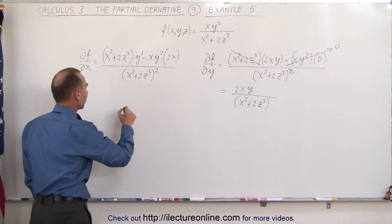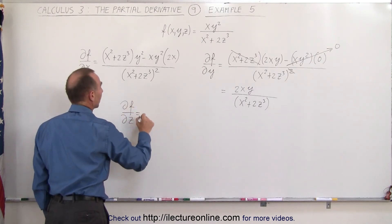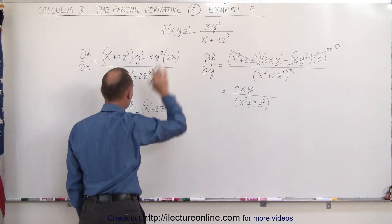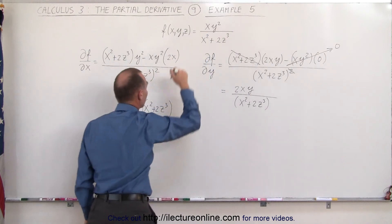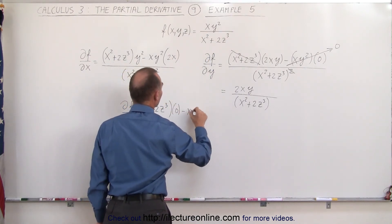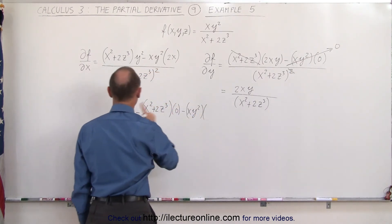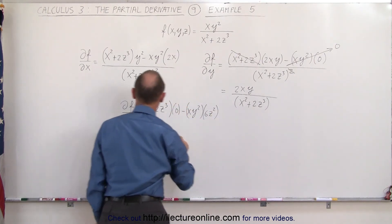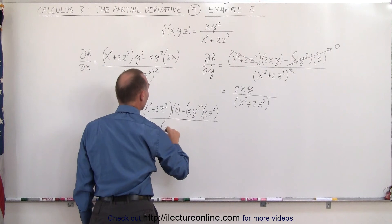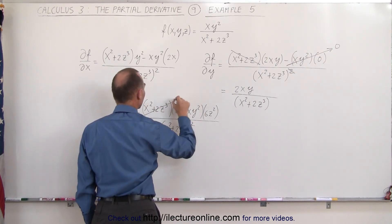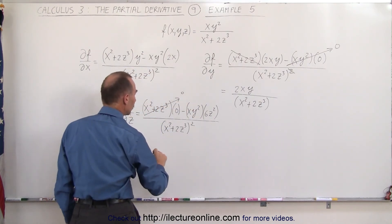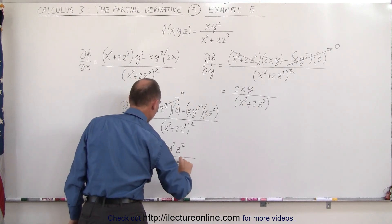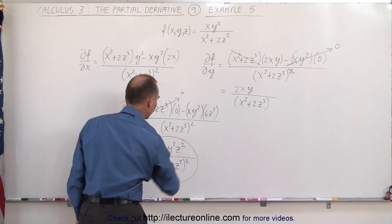Now let's take the partial derivative of the function with respect to z. We take the denominator, x squared plus 2z cubed, multiplied times the derivative of the numerator with respect to z — again it's the partial derivative, which means x and y squared become constants, so the derivative of a constant is equal to 0. Minus the numerator, x y squared, times the derivative of the denominator with respect to z: x squared becomes 0 because that's a constant, and here we get 6 times z to the second power. The whole thing divided by the denominator squared, which is x squared plus 2z cubed, quantity squared. So the numerator term goes to 0, and if we simplify, this is equal to minus 6xy²z² all divided by x squared plus 2z cubed, quantity squared. That's the partial derivative of the function with respect to z.